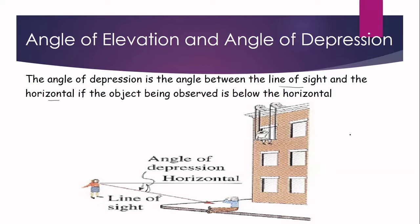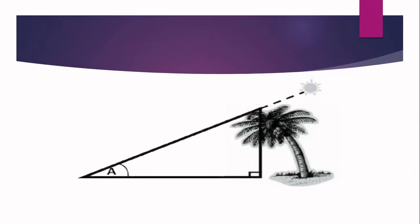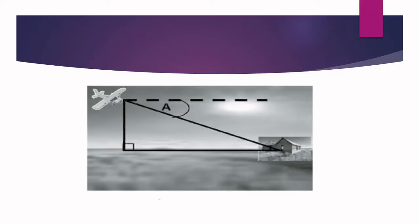Now let us determine whether the following illustrations show angle of elevation or angle of depression. In the first figure, is angle A angle of elevation or angle of depression? Yes, this is angle of elevation. In the second figure, is angle A angle of elevation or angle of depression? Here is our horizontal, meaning our observer is on the plane and what is being observed is below. So angle A is angle of depression.